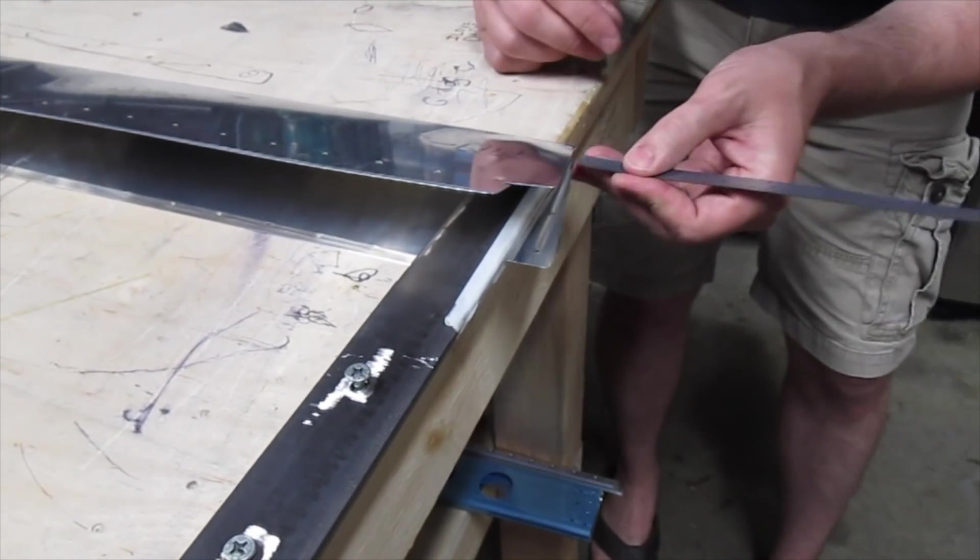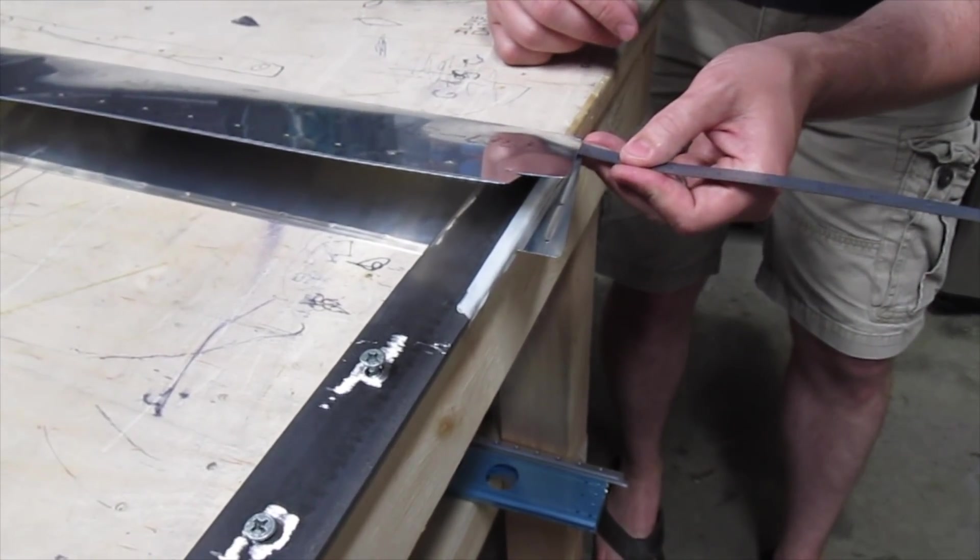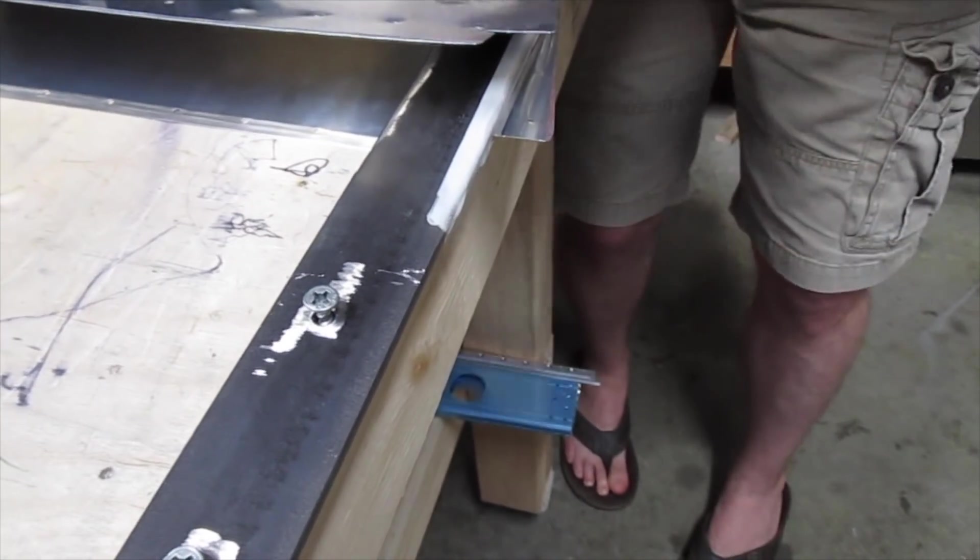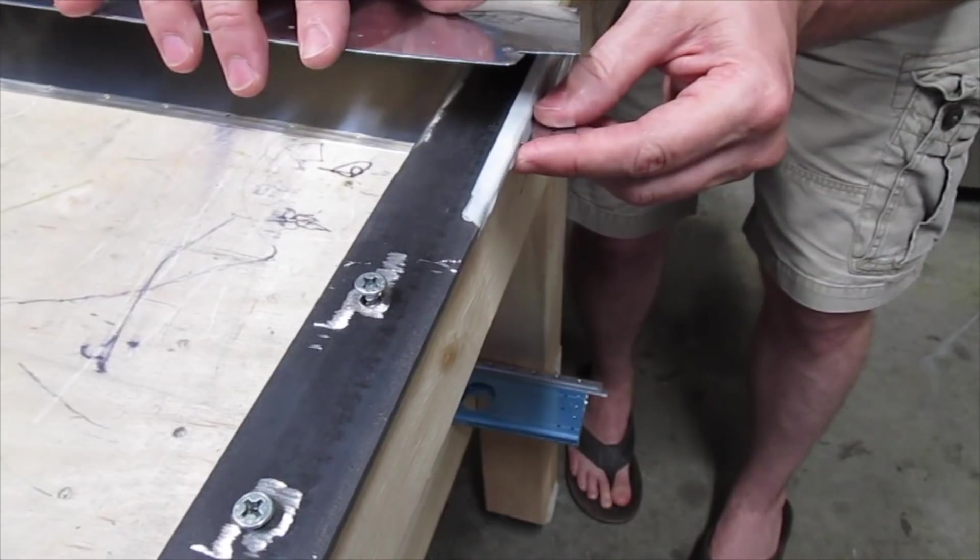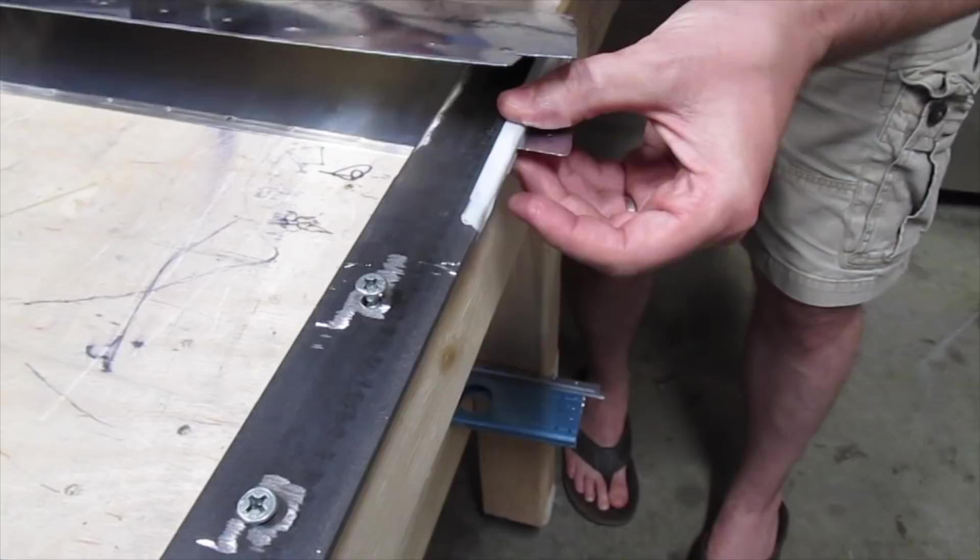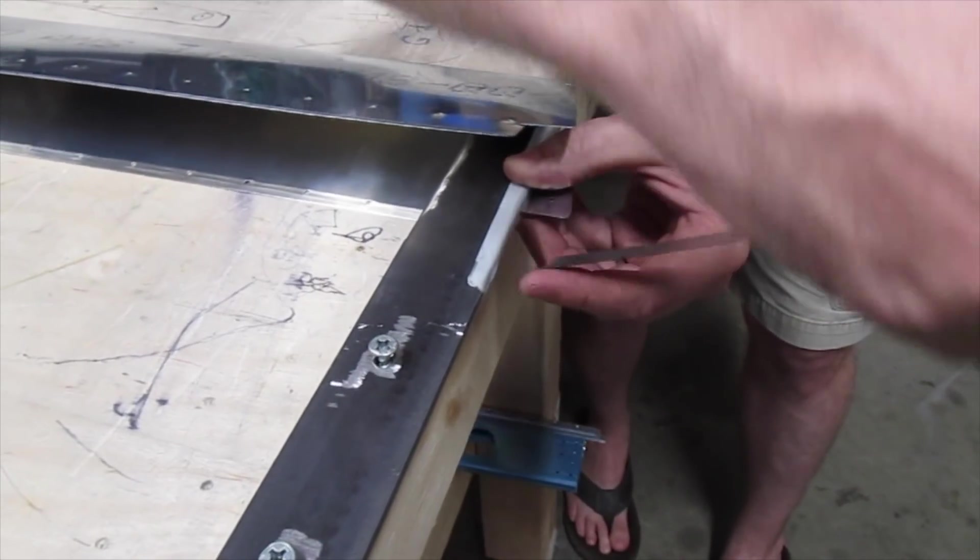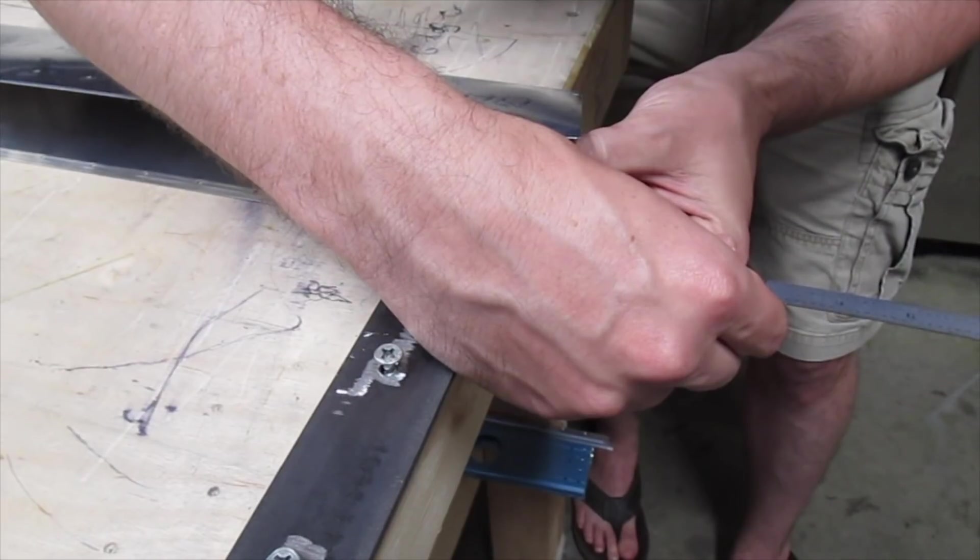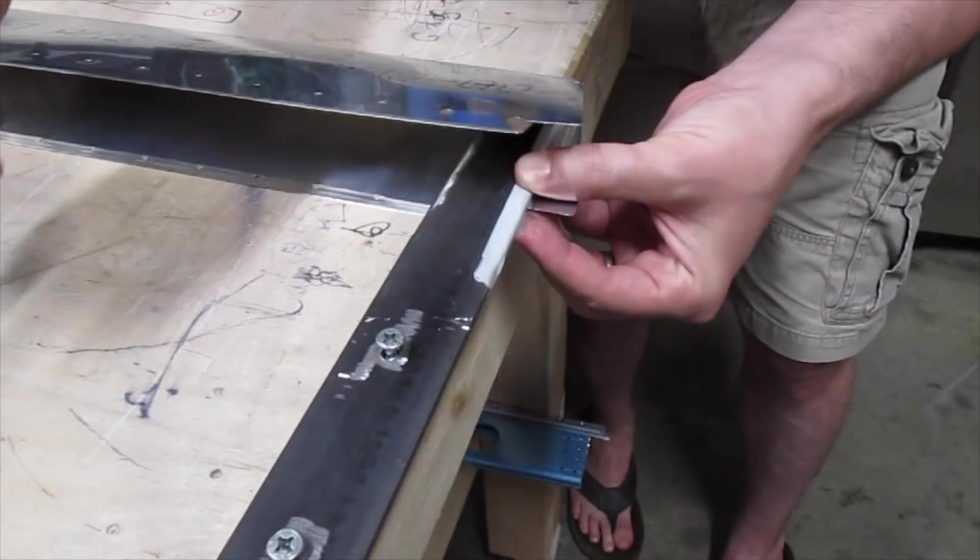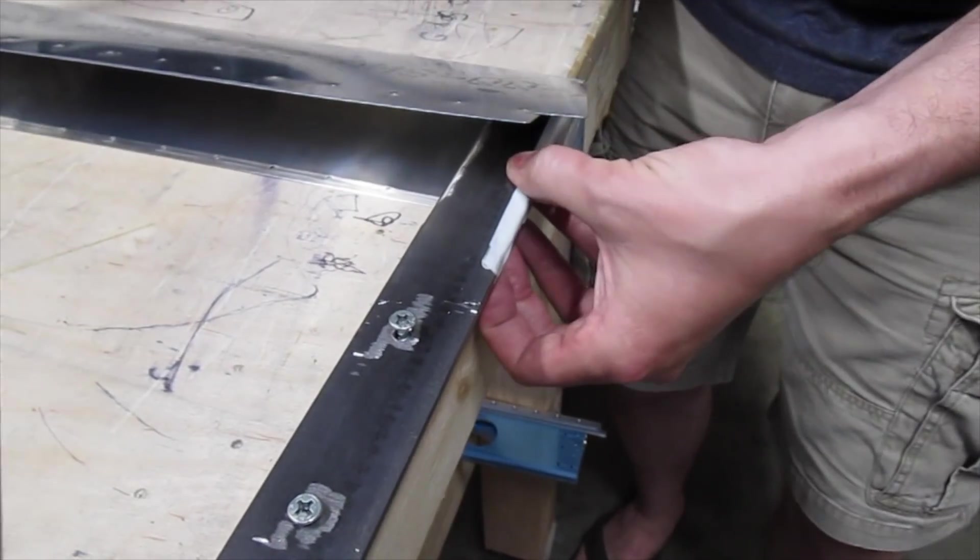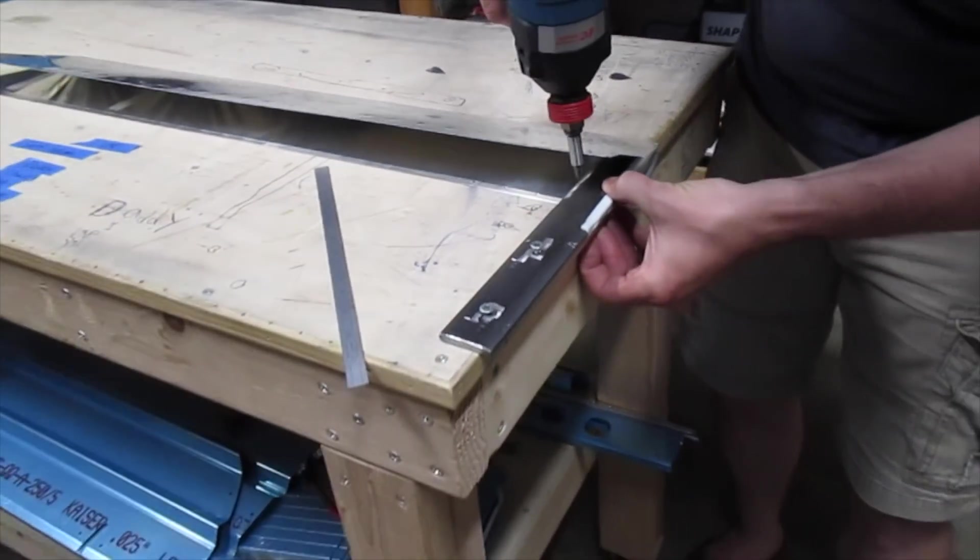But before we tighten it down we'll make sure. What we want to do is measure inboard right there. That's 3/32. That's just a little bit more than 3/32. There we go, that's it.